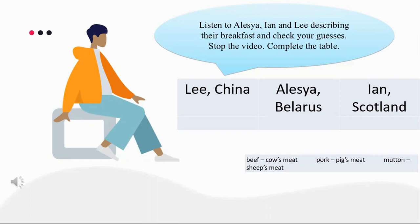I am Ian. I live in Scotland. Every morning I have a bowl of porridge and a glass of milk, or cereals with milk. On Sundays we always have bacon and eggs with tomatoes. Sometimes we have black pudding. I always have a cup of milk tea as my parents don't allow me to drink black or white coffee.